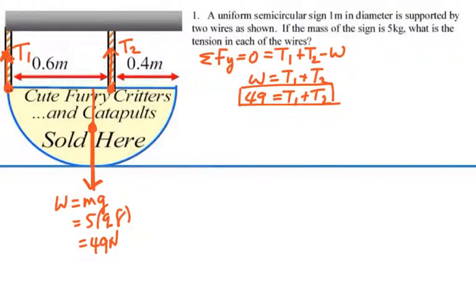We also can set up a torque diagram if we select one of these tension points as being our axis of rotation, say this one, let's call it point A. Then the fact that T1's line of action goes through that point means there's no torque due to that force. We need to only concern ourselves with the other two forces.